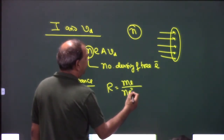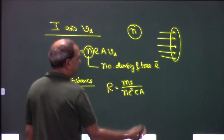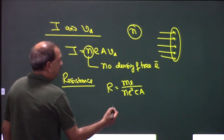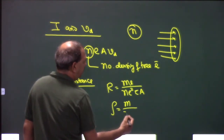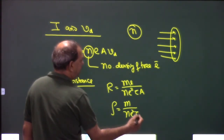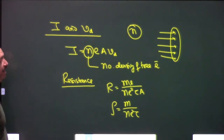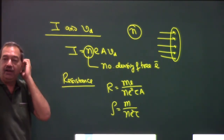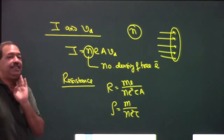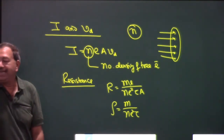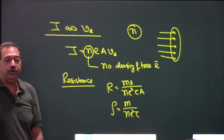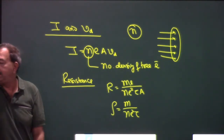The resistivity formula is ρ = m/(ne²τ), and the area-related expression gives resistance. Resistance depends on the shape and size of the conductor — length, area, etc. — while resistivity does not depend on shape and size. For resistivity, only two variables matter: n and τ.